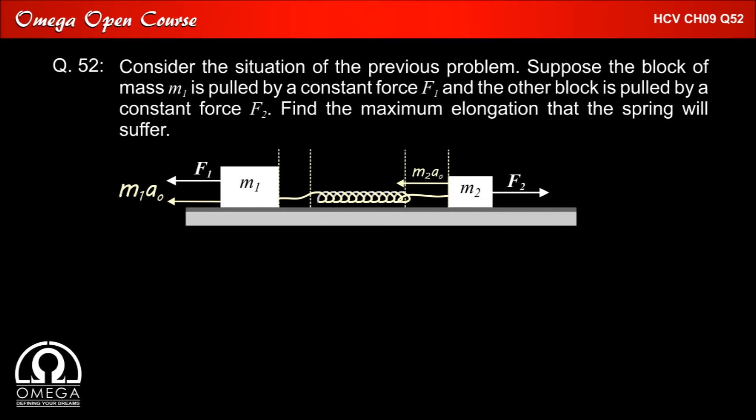As seen from the frame of center of mass, let us assume that when spring is at its maximum elongation, block M1 moves by a distance x1 and block M2 moves by distance x2. Furthermore let us assume that the maximum elongation in the spring is x0. So x1 plus x2 must be equal to x0. This gives us our first equation.